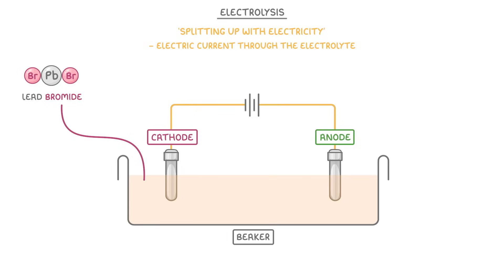The way this works is that the negative bromide ions will be attracted to the positive anode, and when they get there they'll be discharged, which just means that they go from a charged ion to a neutral atom. And in bromine's case, this will cause the atoms to pair up and form bromine gas, which can then float off.